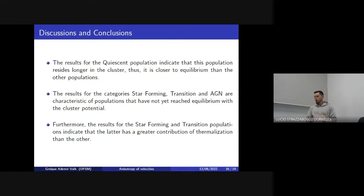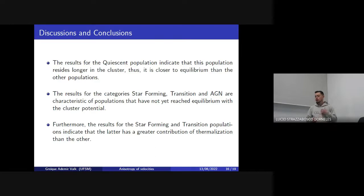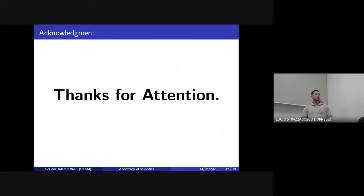These radial orbits indicate that the star-forming, transition, and AGN populations have not yet reached equilibrium with the cluster potential. Furthermore, the results for the star-forming and transition populations indicate that the transition population is closer to equilibrium than the star-forming population, because the star-forming population has more radial orbits. Thanks for your attention.